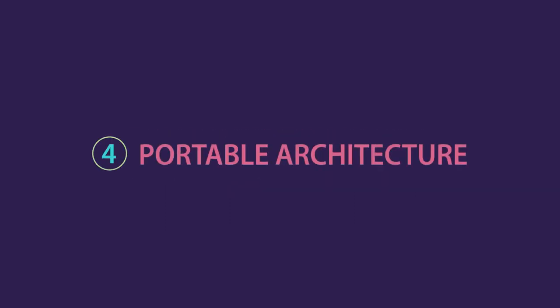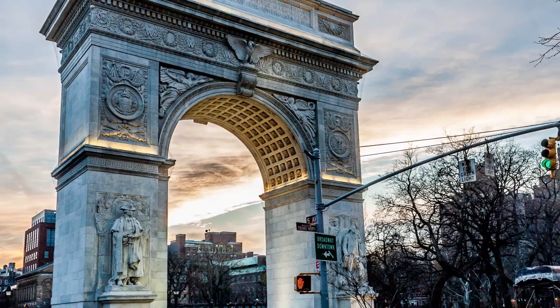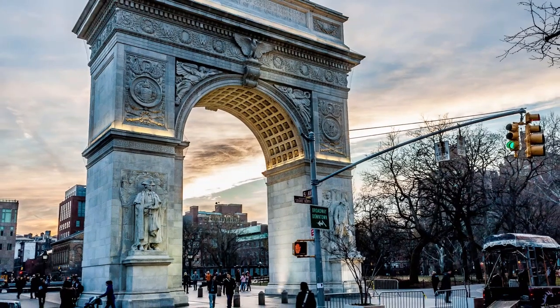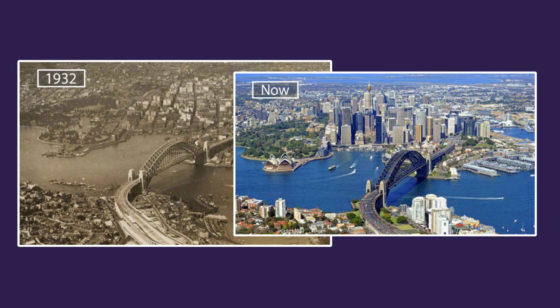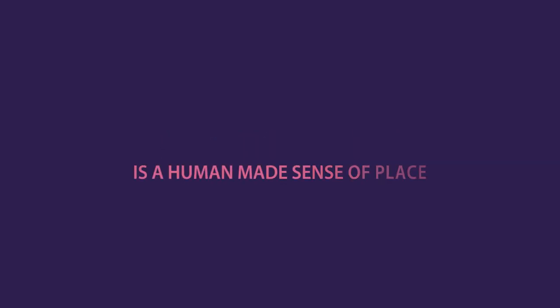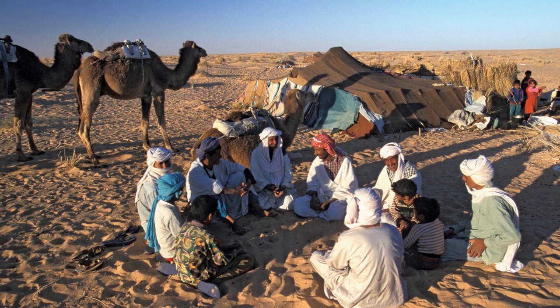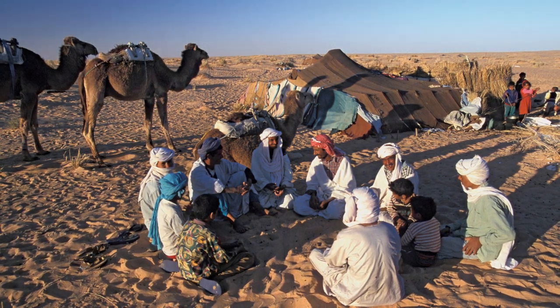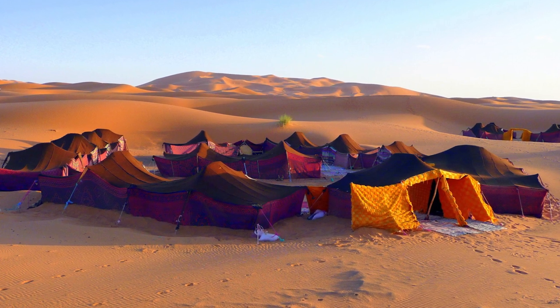4. Portable Architecture. The only constant in human existence is change. Works of architecture that stood the test of time are few and require costly restoration to keep them standing. If we extend our perspective beyond our lifespan, it becomes clear that even permanent buildings come and go. Most of the buildings in your city are probably 100 years old — what stood before them is now long gone. Permanent buildings are rare and require a lot of energy to preserve. Architecture could be defined as a human-made sense of place. The Sahara Bedouins constantly moved their whole societies. Unlike their changing environments, their tents were constant — providing their sense of space and belonging.